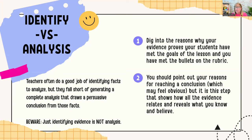You should point out your reasons for reaching a conclusion. That may feel obvious to you — you may be like, they should know this — but they can't just know this. There's no inferencing. The National Board score isn't subjective. They are going to find evidence or not find evidence. It is a step that shows how and why — remember, how and why are super important in analysis. All of your evidence is relating and it reveals what you know and what you believe. I cannot reiterate it enough for you: beware of just identifying evidence and not analyzing.